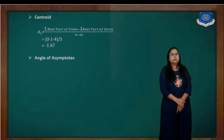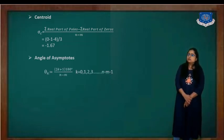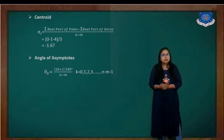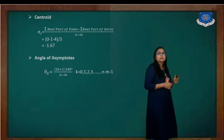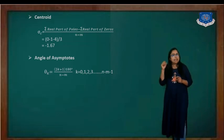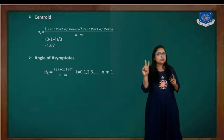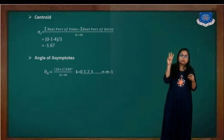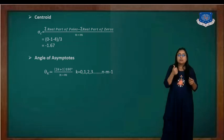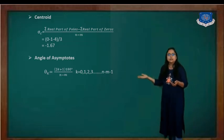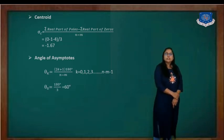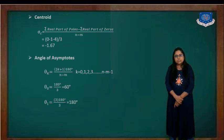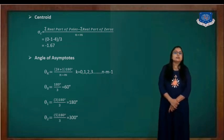Now the angle of asymptotes. The equation is theta_K equal to (2K+1) times 180 degrees divided by P minus Z. The value of K varies from 0 to P minus Z minus 1, which is 2. So K equals 0, 1, and 2, giving us three angles. For K=0, theta_0 equals 60 degrees. For K=1, theta_1 equals 180 degrees. For K=2, theta_2 equals 300 degrees.